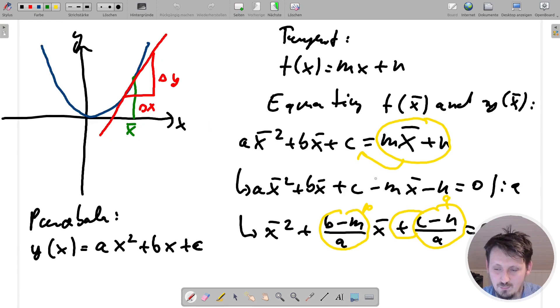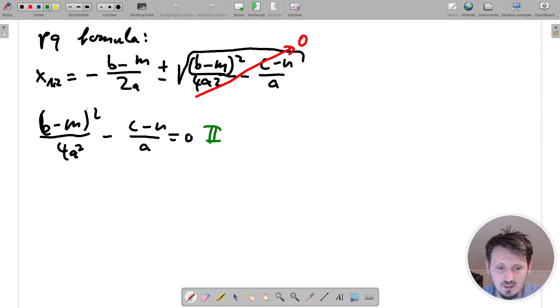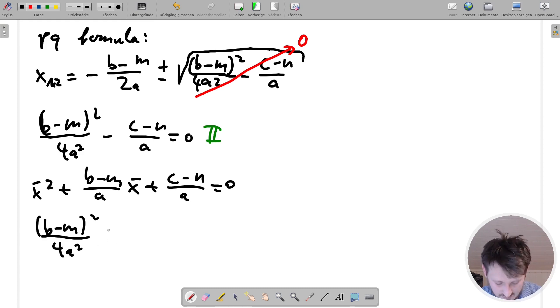So now we have two equations, the one which we have defined before, this number one here, which is a quadratic equation. And here we have another one, which is actually or which does not contain any X at all. So now we can now write down this equation, this system of equations. So we take the first one again, which I have mentioned before, which is actually given as X bar square plus B minus M divided by A, X bar plus C minus N divided by A equal to zero. And the second one was here B minus M squared divided by four A squared minus C minus N divided by A equal to zero.